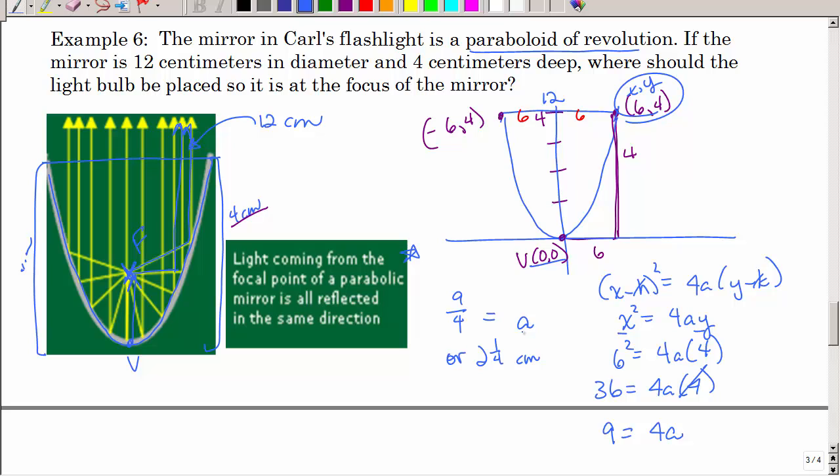Now, what does A stand for? That's important. We started the notes off. Go back to the first page. What is A? A is the distance from the vertex to the focus. So if my vertex is here, and I want to go up 2 and a little bit more, a fourth, that's going to be my focus. So where should the light bulb be placed so it is at the focus of the mirror? I would say 2 and 1 fourth or 2.25 centimeters above the vertex or above the bottom of the mirror.